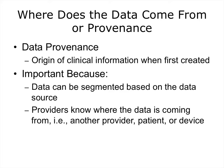Where does the data come from? The provenance of the data is the origin of clinical information, or when it was first created. The origin can be a variety of places: it could be in the clinician's office, a lab, from wearable technology, or from the patient's home — such as their own glucose monitoring or blood pressure monitoring. Knowing where clinical information was created is very important, because we can technically segment the data based on where it came from. If we can identify the provenance, we can provide that information to our clinician and segment the data so it is used correctly when decisions need to be made.